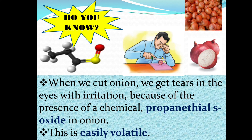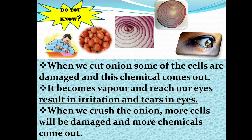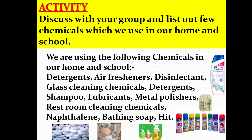We get tears in the eyes with irritation. Discuss with your group and list out the chemicals we use in our home and school: detergents, air fresheners, disinfectants, glass cleaning chemicals, shampoo, lubricants, metal polishers, restroom cleaning chemicals, naphthalene, and bath soap.